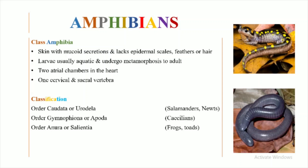Class Amphibia is further divided into three orders: Order Caudata or Urodela, which includes salamanders and newts; Order Gymnophiona or Apoda, which includes Caecilians; and Order Anura or Salientia, which includes frogs and toads.